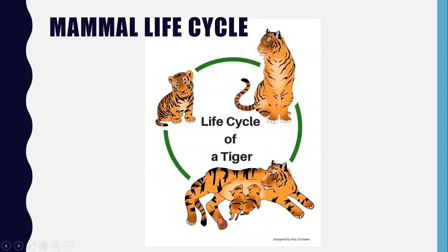The next one is of a mammal, and this is the only one that doesn't have an egg, because mammals are born from their mums — they don't come from an egg. So we have the adult tiger, and the adult tiger gives birth to some baby tigers. The baby tigers — or cubs — grow up to become adults. And then the cycle starts again: the tiger has babies, the baby grows up to become an adult, and it continues on and on.